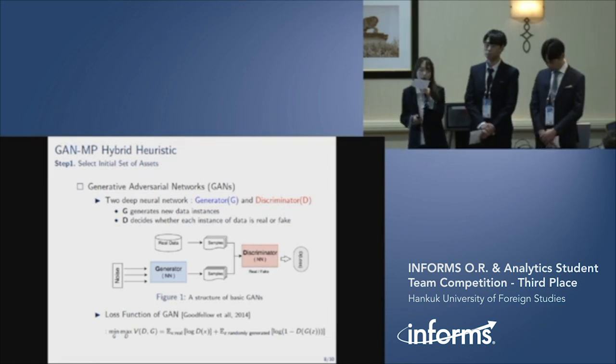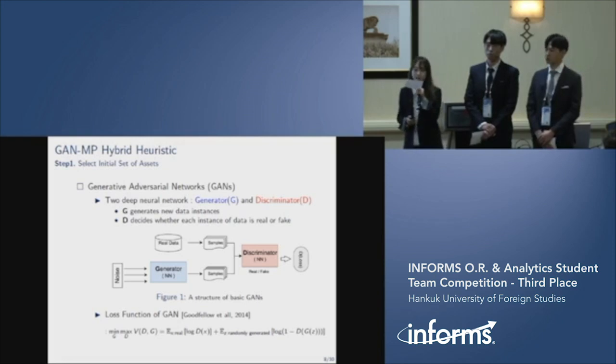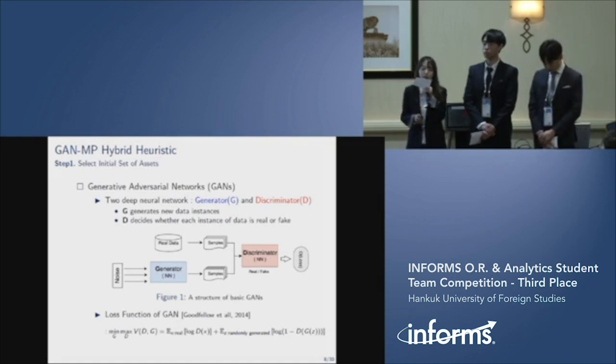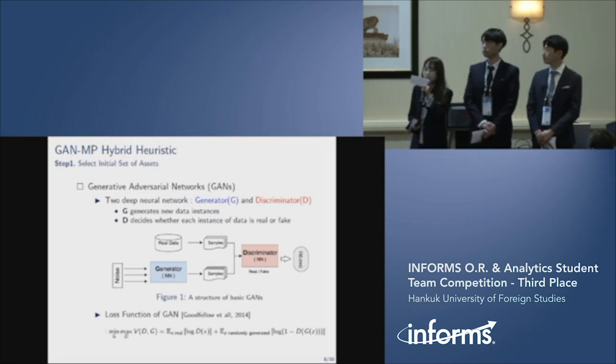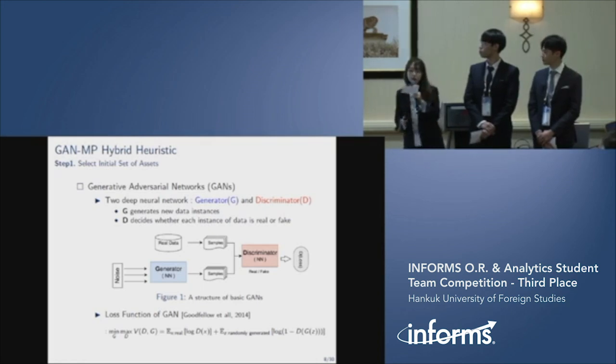In step one, we select 50 to 70 assets to invest. The process of step one is important in determining the overall quality of the solution. So we propose GAN, a neural network-based algorithm, as a method for selecting good initial assets in a short time. GAN stands for Generative Adversarial Networks, which is one of the most popular topics in machine learning these days. Actually, it is widely used for image and voice recognition.